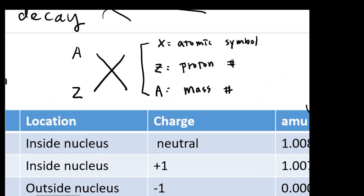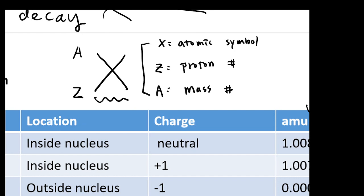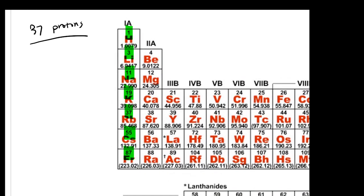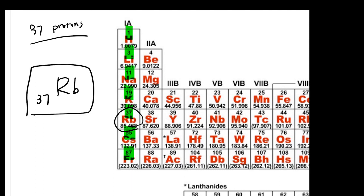The atomic symbol is determined by the proton number. If you look at your periodic table, the numbers on the top tell you how many protons that specific atom has. For example, hydrogen has one proton, lithium has three protons, and potassium has 19 protons. If I tell you an atom has 37 protons, you should know I'm talking about Rb. Once you know the proton number, you can identify the atomic symbol on the periodic table.